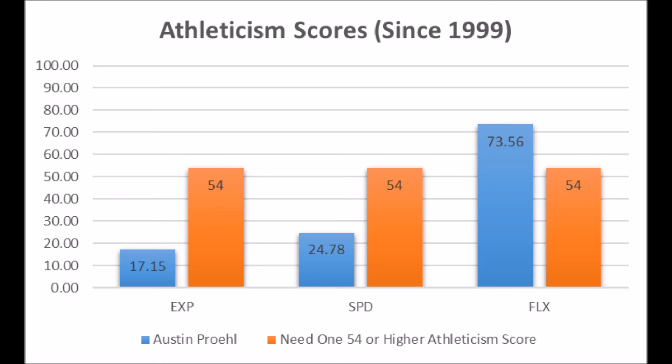Looking at the Buffalo Bills draft class as a whole: there are some successful players here. Edmonds, Harrison Phillips, Siran Neal, and Wyatt Teller are the four picks with a very good shot to become long-term successful NFL players. However, Josh Allen, Teron Johnson, Ray-Ray McCloud, and Austin Proehl — it's very unlikely those players go on to become consistent long-term starters based on their production data. I'm always welcome to have the data prove me wrong.